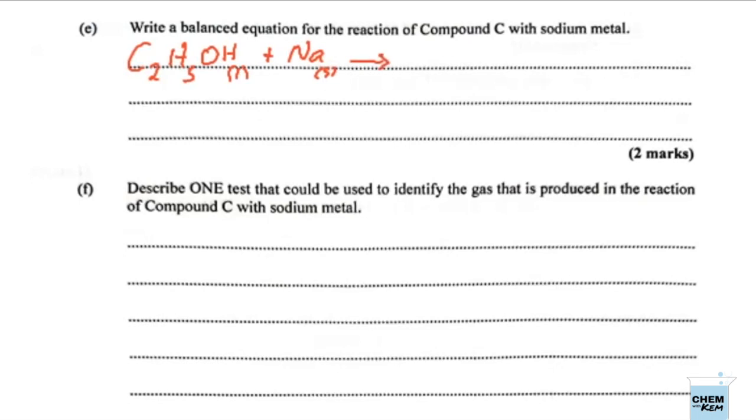In this case, that H at the end is going to be acting as a replaceable hydrogen with a very reactive metal like sodium. So we'd end up with C2H5ONa. This is an alcoholic medium, it's not aqueous. And then this would liberate hydrogen, but we cannot write H by itself. It's diatomic, so that would have to be H2.